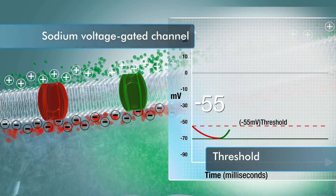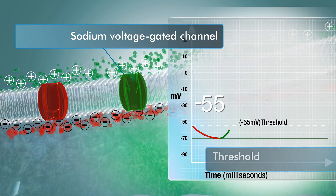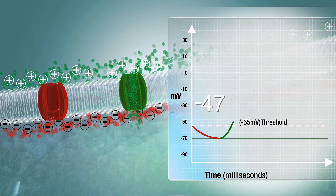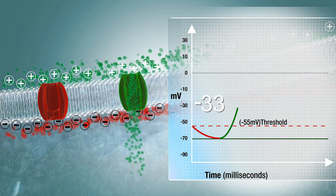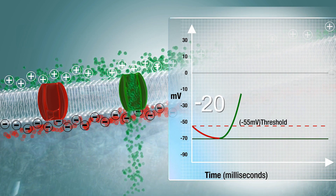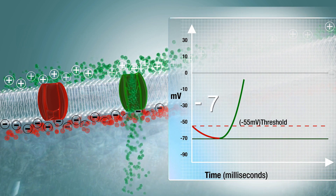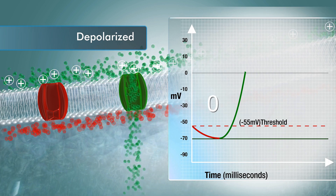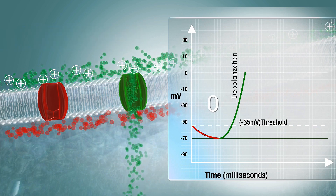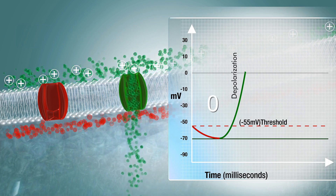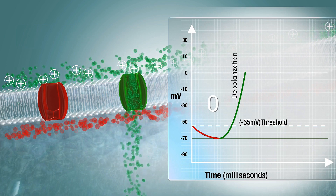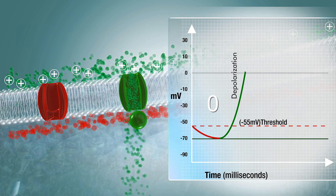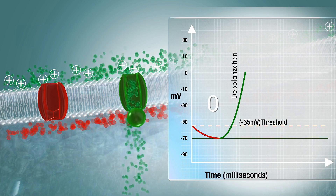Both sodium and potassium voltage-gated channels are stimulated to open. Sodium channels open quickly, allowing sodium ions to diffuse in and add positive charges to the inside of the cell membrane. If enough positively charged sodium ions diffuse in to bring the voltage on the inside of the membrane to zero millivolts, it becomes uncharged and we refer to the cell membrane as being depolarized. Sodium channels are only open long enough to allow sufficient sodium ions to pass through to cause depolarization, at which point the inactivation gate on the sodium channel closes to block any further inflow of sodium ions.